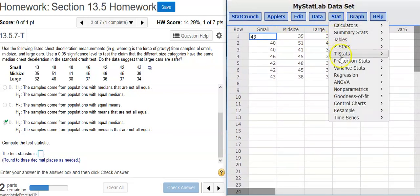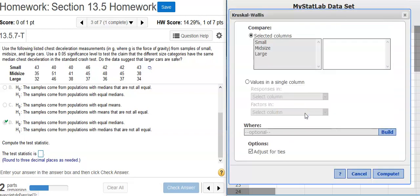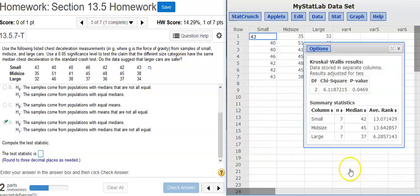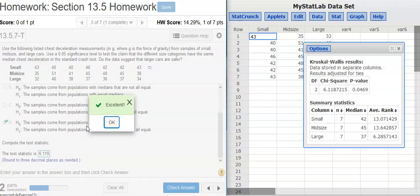Okay, here in StatCrunch, I go to Stat, Non-Parametrics, Kruskal-Wallis. Here in my options window, I'm going to select my columns, and that's all there is to it. Here's my test statistic. I'm asked to round to three decimal places. Excellent!